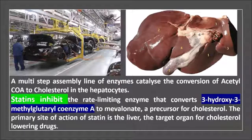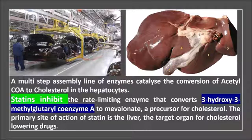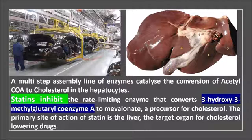Cholesterol is synthesized in the liver by a multi-step process like a car assembly line. A series of enzymes convert acetyl-CoA to cholesterol — this is a physiological process called the mevalonate pathway. Statins target the enzyme HMG-CoA reductase to stop the synthesis of cholesterol. They competitively inhibit this enzyme, reducing cholesterol concentration in the blood and reducing the risk of cardiovascular events.